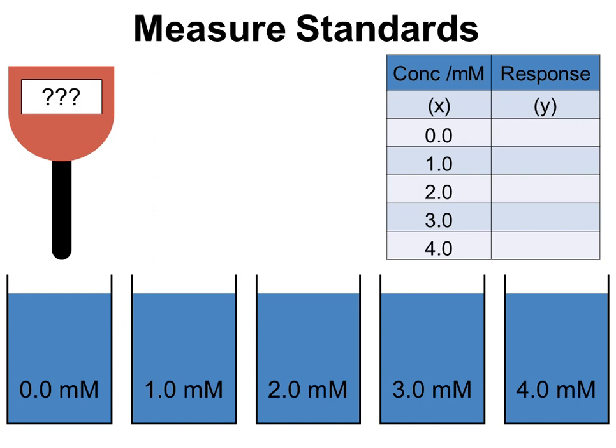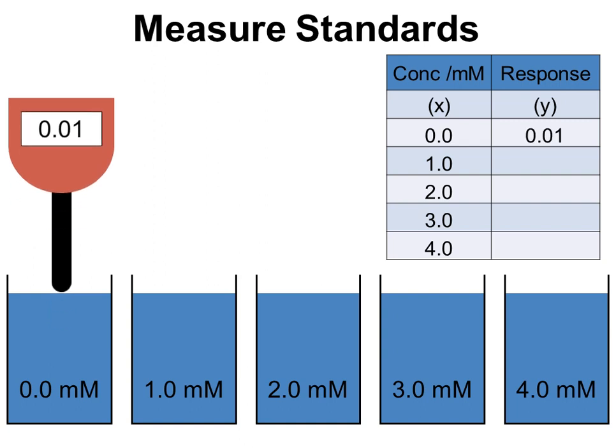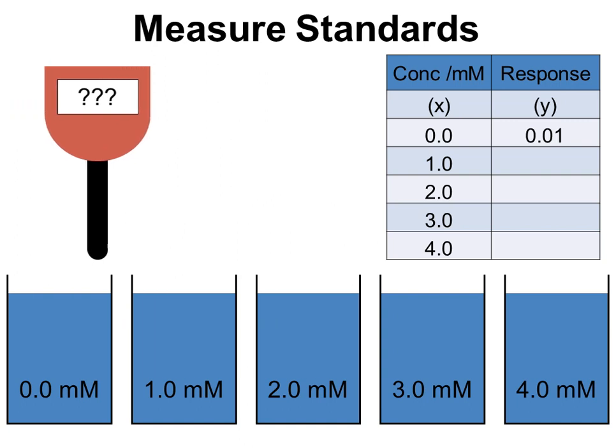The first thing that we would have to do to do a standard series calibration is to make several standards with known concentrations. In this case we've got 0 mmol all the way through to 4 mmol in 1 mmol increments. We'd take our instruments and we'd normally start with the lowest concentration, put our instrument into that, or we'd feed our sample into our instrument depending on the setup, and we'd wait to get a reading. So we've measured our 0 mmol, which is sometimes referred to as our blank. We record the value that we get there.